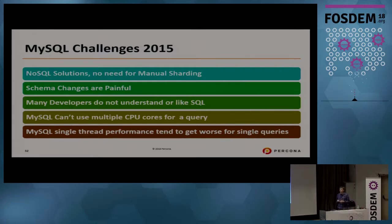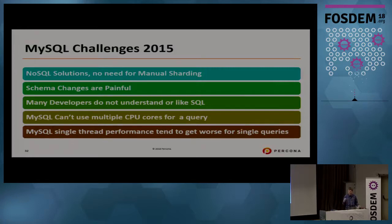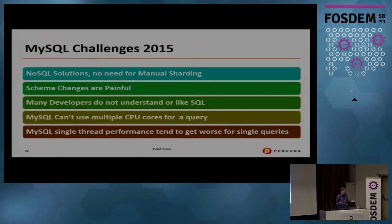What kind of challenges did we see with MySQL in 2015? As I mentioned, a lot of new NoSQL solutions were coming up. The wonderful thing with those solutions was there was no need for manual sharding anymore. Solutions like MongoDB, Cassandra, and others have sharding done automatically — you just need to scale, you add more nodes to a cluster and it works. Yes, you have to trade a lot of SQL features for that, but you get much easier scalability, which is good enough for some applications.